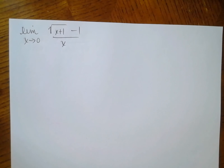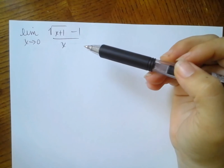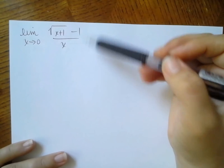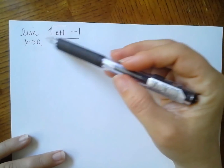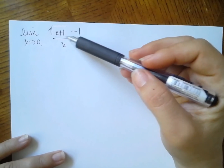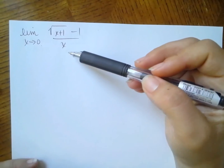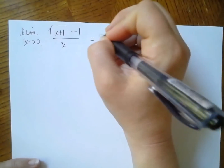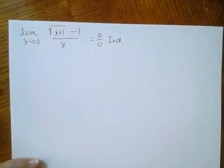This next one requires a different strategy — limits that have a radical in them. Again, I should make sure I'm in indeterminate form first because if I'm not, I just plug in the number. If I plug in 0, I get the square root of 1 which is 1, minus 1, which is 0, and on the bottom I get 0 too. So I do have indeterminate form, which means there's an algebra trick.